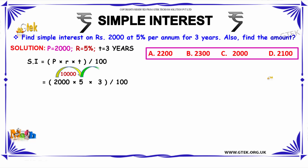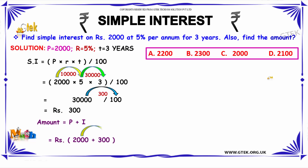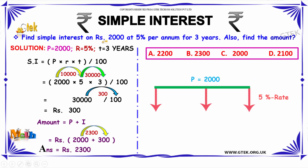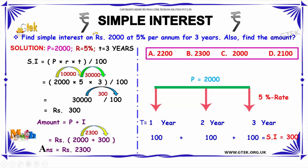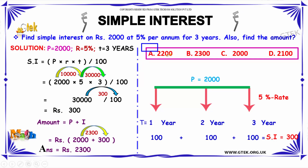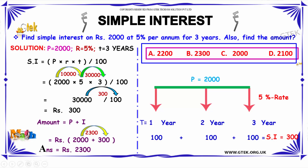Now let us see some example problems on simple interest. The problem is: find the simple interest on rupees 2000 at 5% per annum for 3 years, and also find the amount. The options are: option A — 2200, option B — 2300, option C — 2000, and option D — 2100.